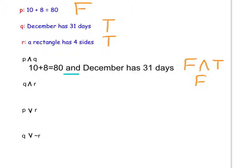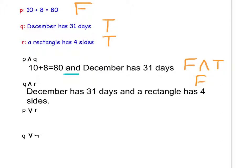The next statement is Q AND R. Pause the video and write the compound statement for Q and R. The compound statement written out is: December has 31 days AND a rectangle has 4 sides. Now we determine the truth value. Statement Q is true and statement R is true, so the compound statement is true — because true AND true gives a true result.